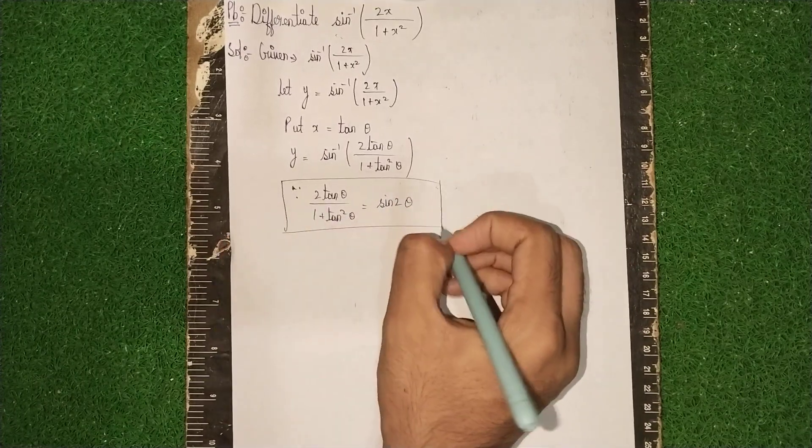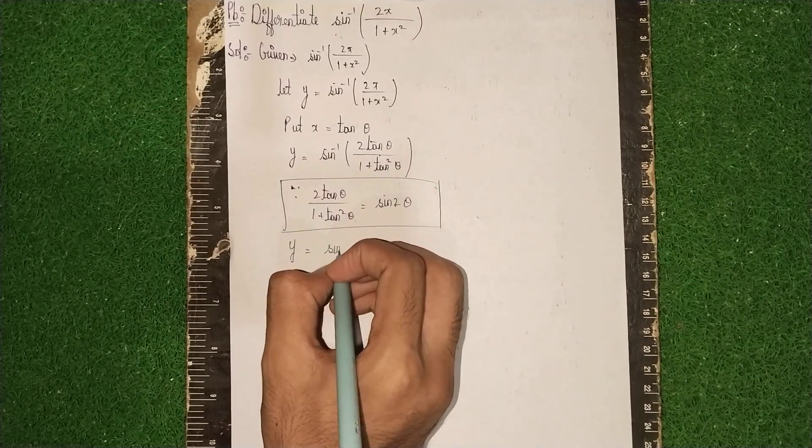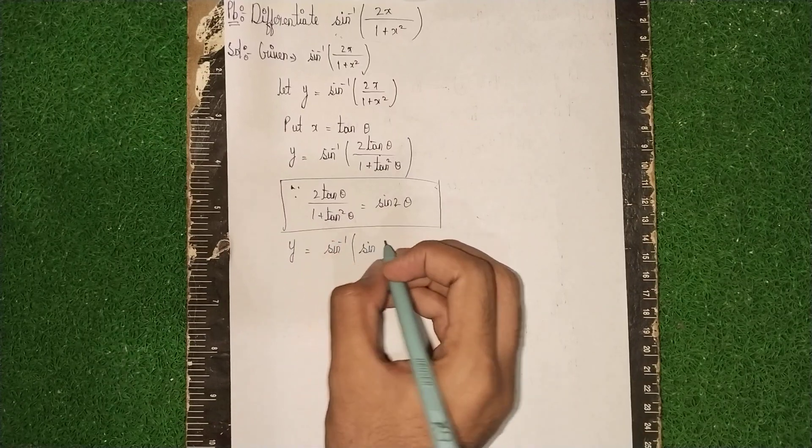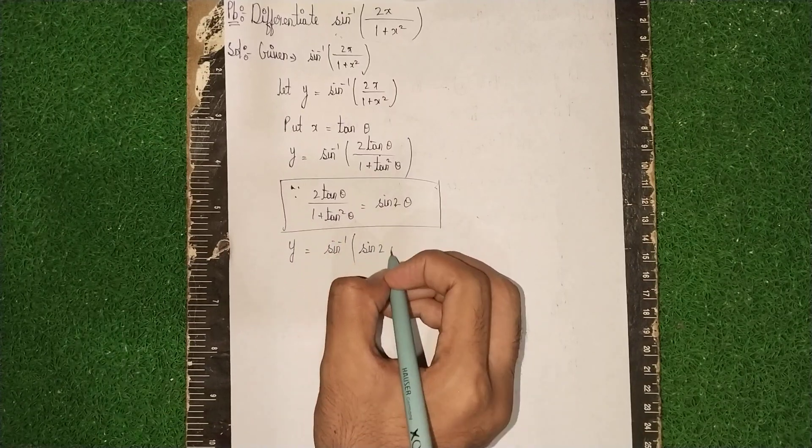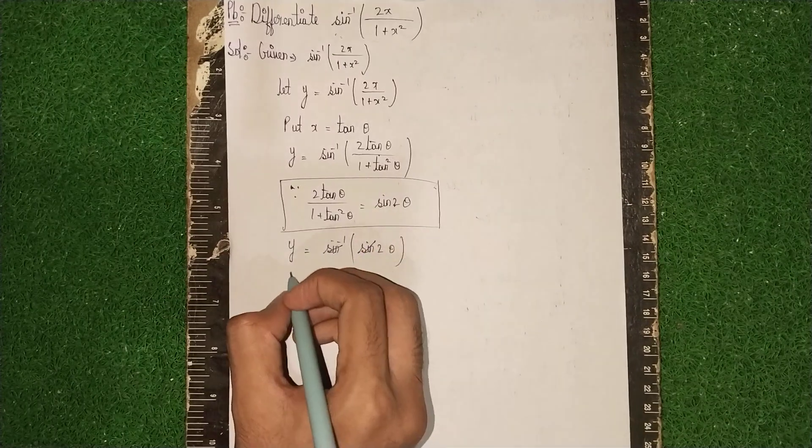Instead of this, we can write sin 2θ. So y = sin⁻¹(sin 2θ). Here, sine and sine inverse cancel. What remains is y = 2θ.